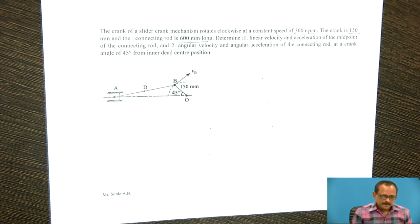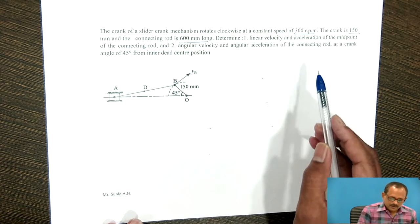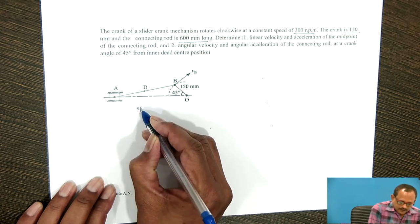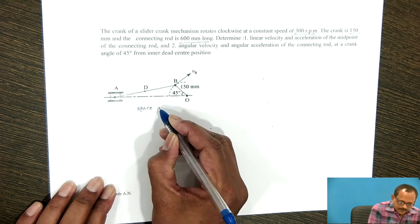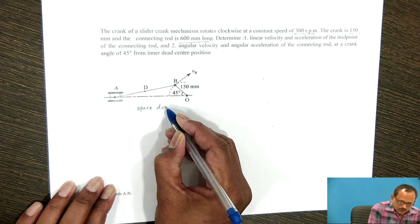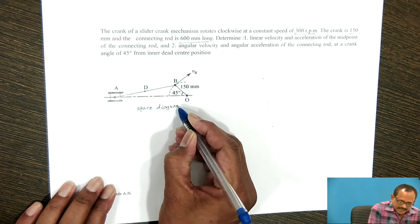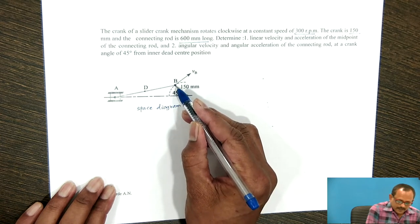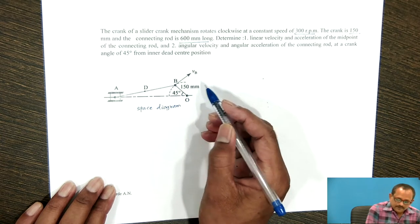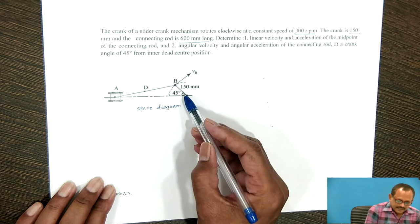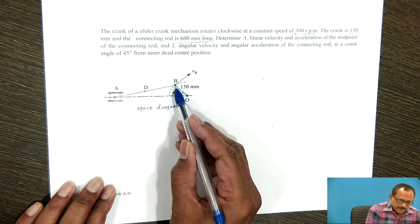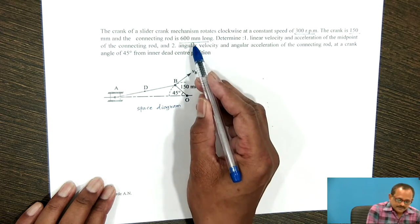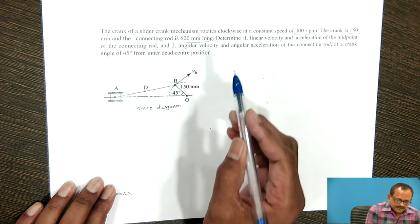First of all, the space diagram is to be plotted according to a suitable scale. The crank is making an angle of 45 degrees with IDC. Draw a line OB which will represent the crank. Then, from point B, draw a line AB which will represent the connecting rod of 600 mm long.